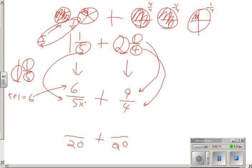So what did I do? Well, I multiplied that by 4, so I multiplied this by 4, I get 24/20. I multiplied this by 5, so I multiplied this by 5, I get 45/20.